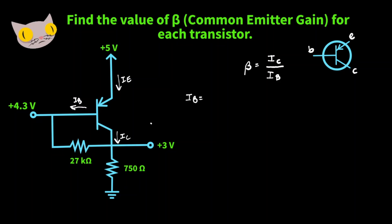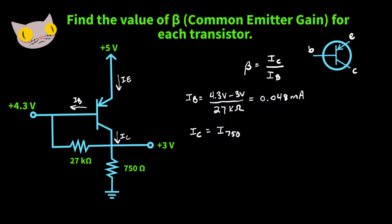First, let's find the base current. For this layout, we're going to need 4.3 volts minus 3 volts, and that's going to be over the resistor 27k ohms, giving us about 0.048 milliamps. The value of the collector current is going to be equal to the value of the current through the 750 ohm resistor minus the base current. We have the base current; let's find the current running through this resistor, which we can do by dividing the 3 volts by the 750 ohm resistor — giving us about 4 milliamps.